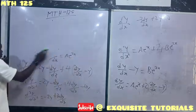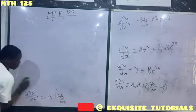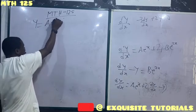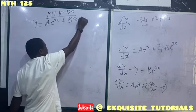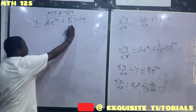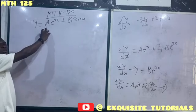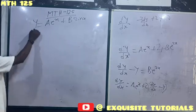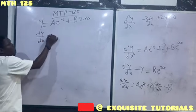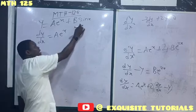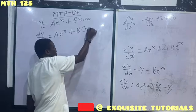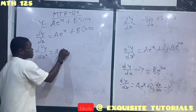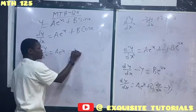Let's do one more example. We have a solution y equals a·e^x plus b·sin x, and we want to obtain the differential equation. There are two arbitrary constants, so the order will be 2. Differentiating once: dy/dx equals a·e^x plus b·cos x. Differentiating a second time: d²y/dx² equals a·e^x minus b·sin x.